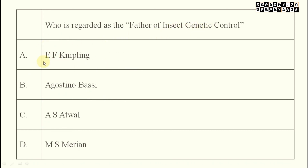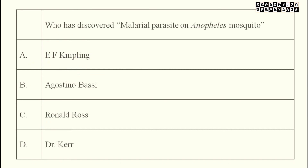Next: who is regarded as the father of insect genetic control? That is E.F. Knipling — he is regarded as the father of insect genetic control, as discussed in class. Finally: who discovered the malarial parasite on Anopheles mosquito? Among the options given, Ronald Ross is the answer — he discovered the malarial parasite on the Anopheles mosquito.